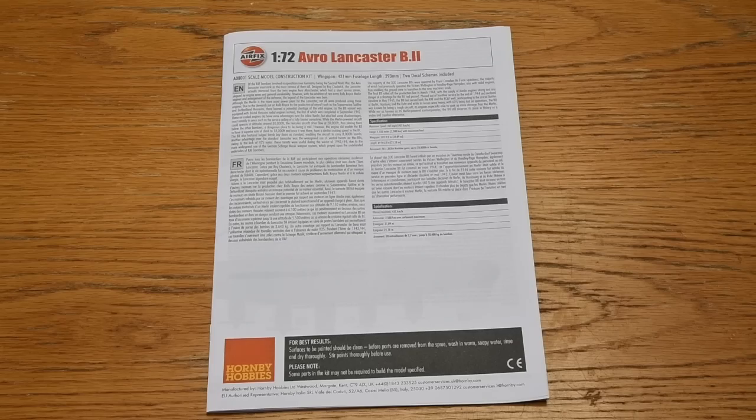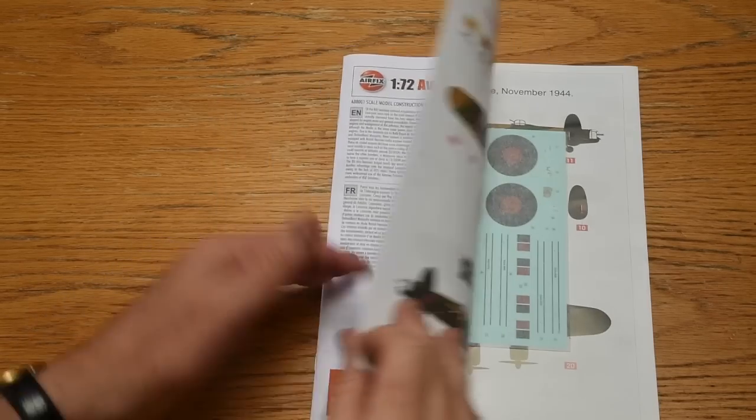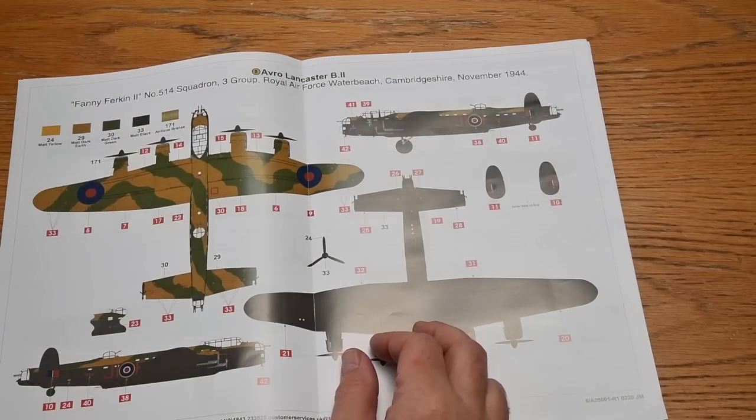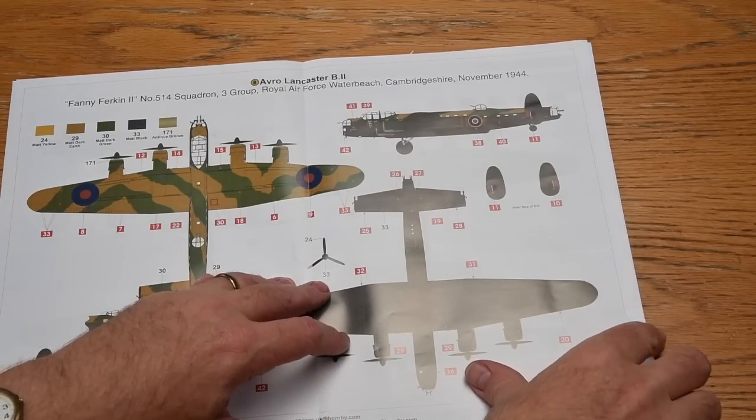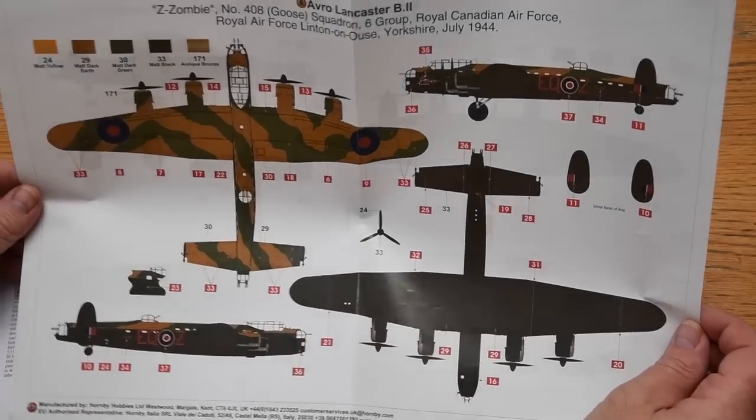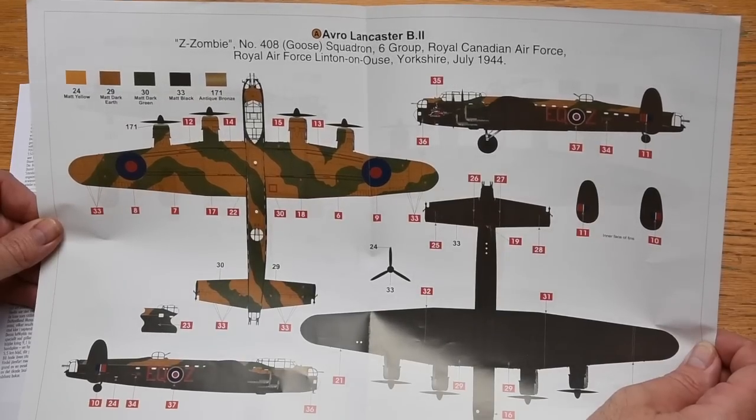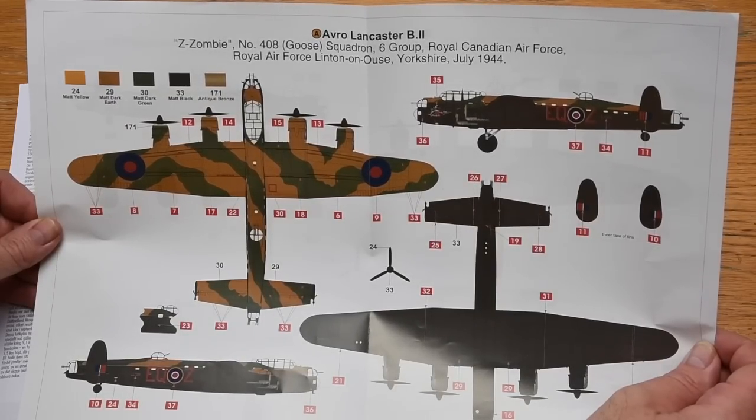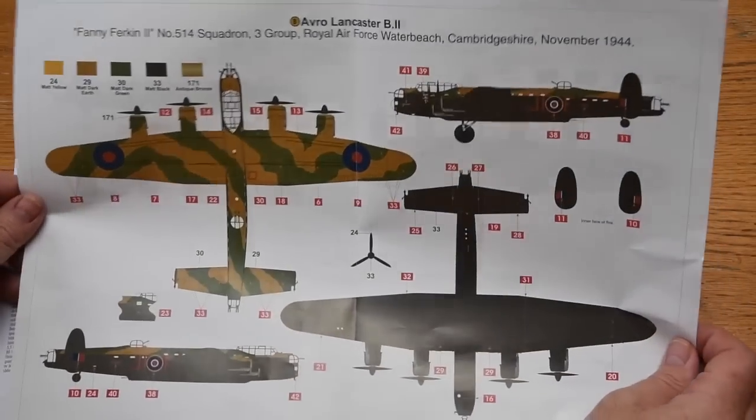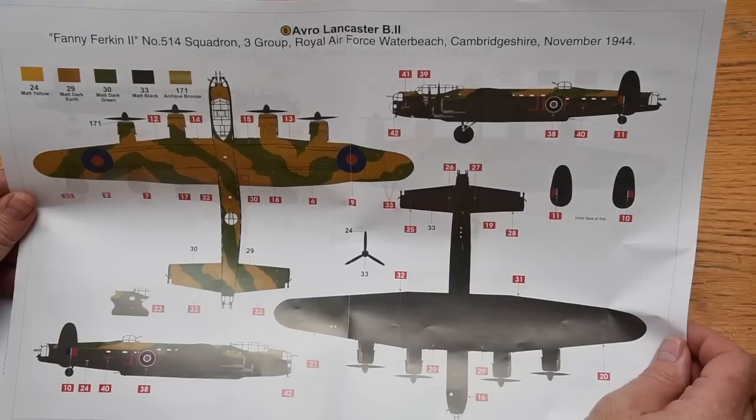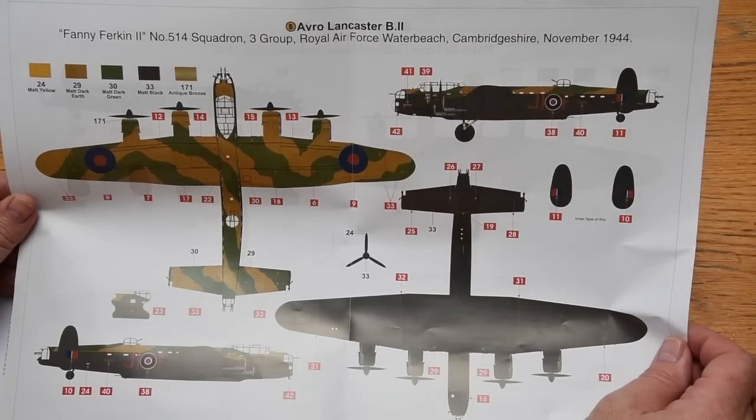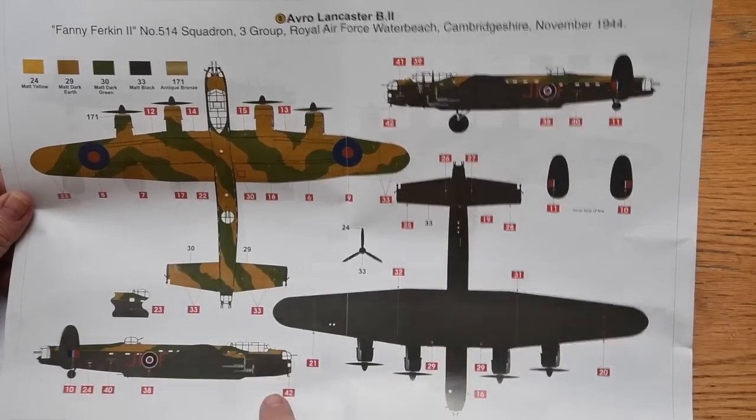Let's have a quick look at the instructions now. What comes in here is a big sheet of decals. The two colour schemes that are available for this model: this is for Z-Zombie from 408 Squadron, Royal Canadian Air Force in 1944. And this one is Fanny Firkin II from 514 Squadron of three group in 1944. This is the one I'll be building. You'll notice here the extra gun position, which is quite unusual and that's the reason why I'm making this particular one.